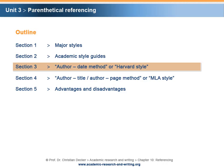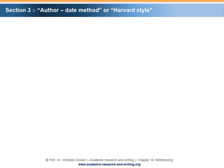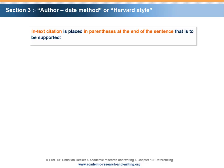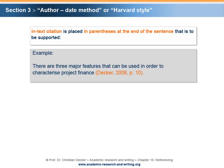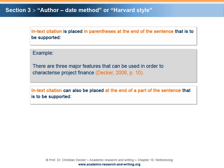Section 3 – Author-Date Method or Harvard Style. The following examples show how the Author-Date method, respectively the Harvard style of parenthetical referencing, is used. Option 1 – The in-text citation is placed in parentheses at the end of the sentence that is to be supported. Option 2 – The in-text citation can also be placed at the end of a part of the sentence that is to be supported.